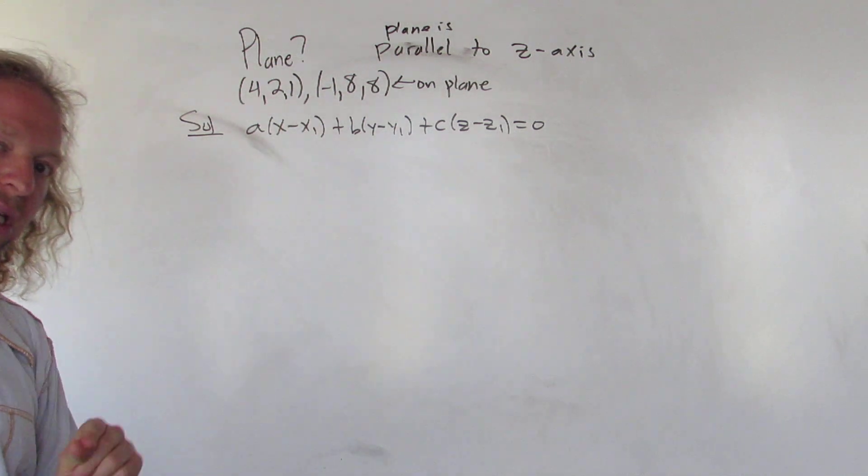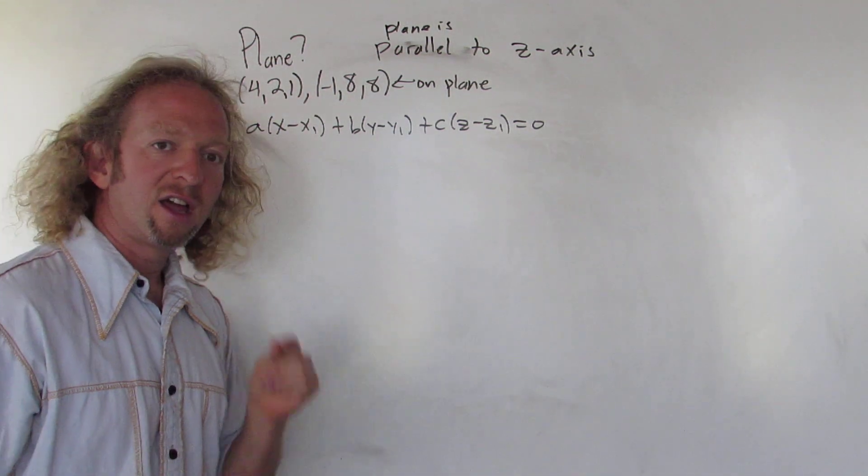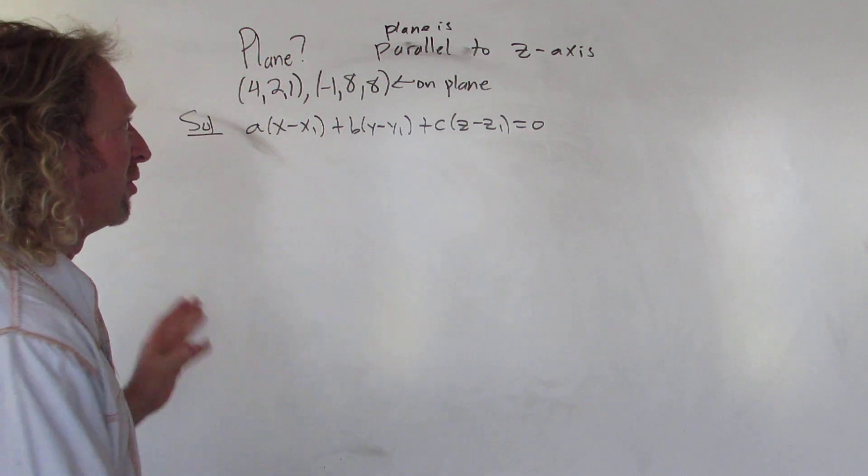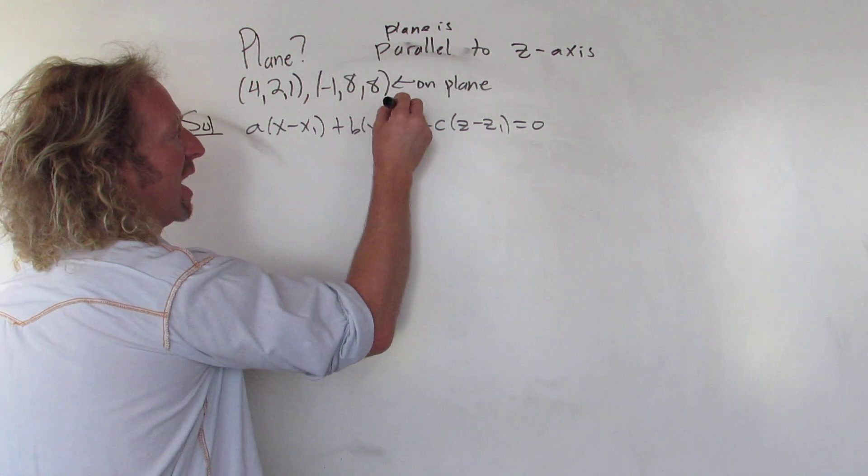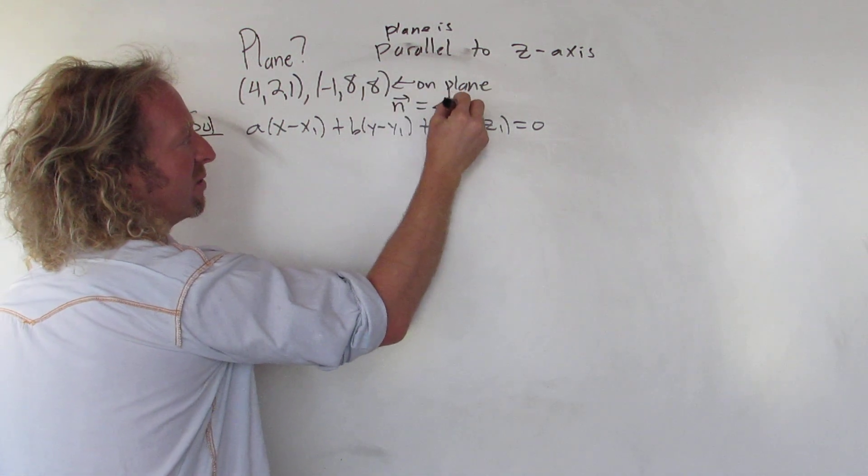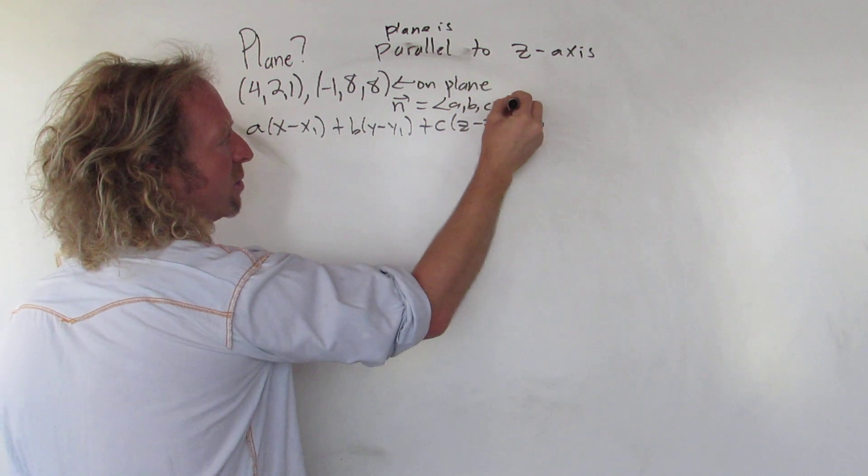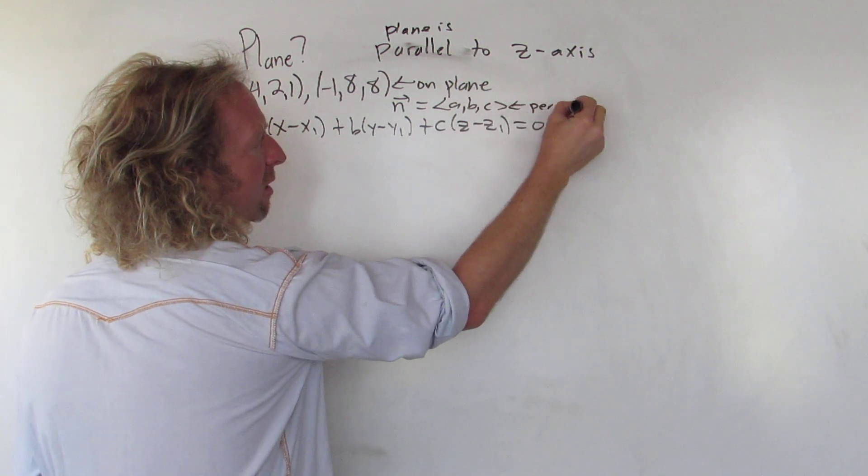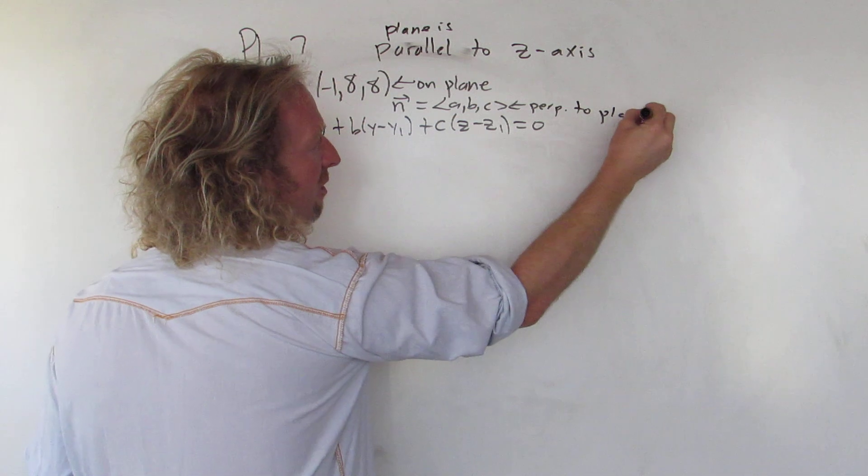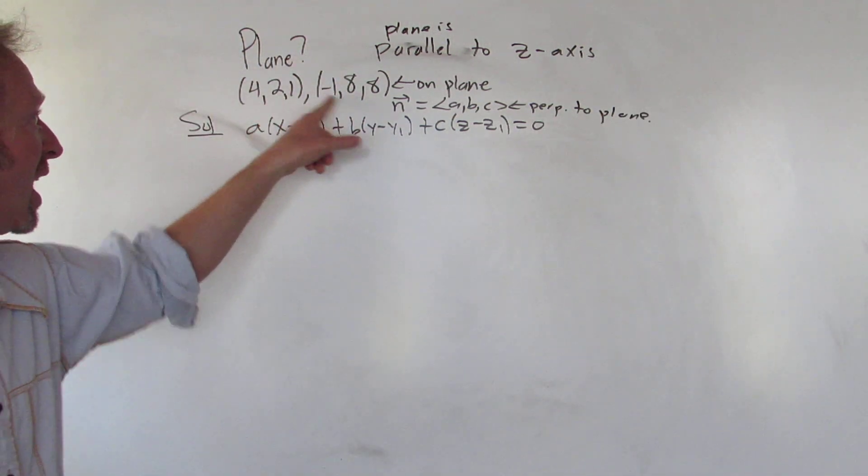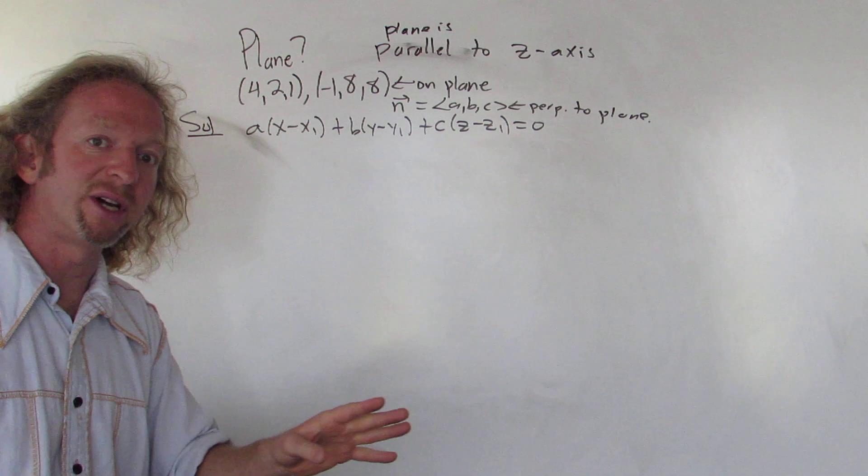The only thing we need to finish this problem is abc. That is a vector. So the normal vector is going to be n = <a, b, c>. So this is perpendicular to our plane. If we find this we're done, because we can just plug in any of these numbers in here and plug in our abc and we're done.